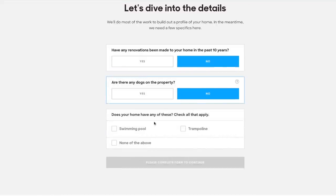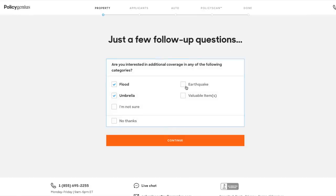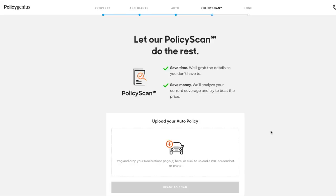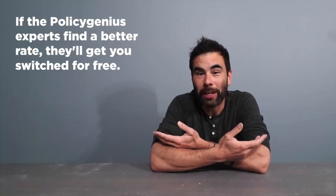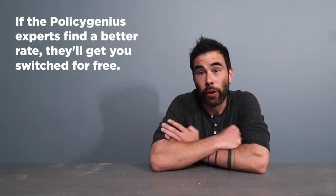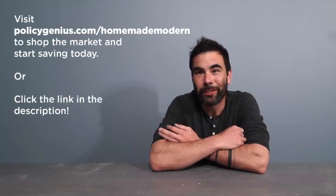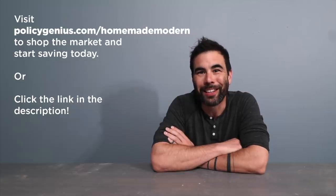And Policy Genius has saved their home and auto insurance customers an average of $1,000 per year. And if the Policy Genius experts find a better rate, they'll switch you over for free. If you own a car too, Policy Genius can mix and match different coverages just to find that great combination that's going to give you the most value.